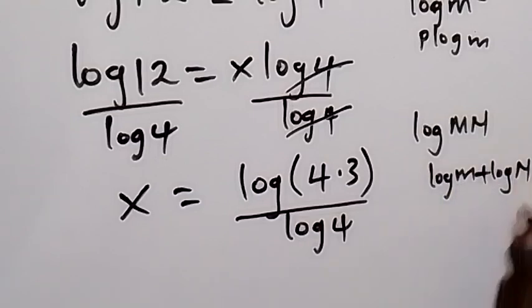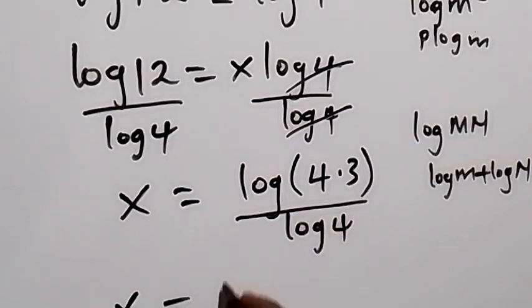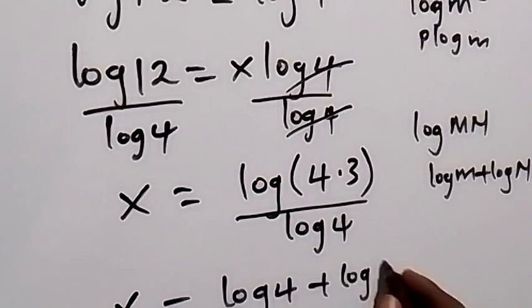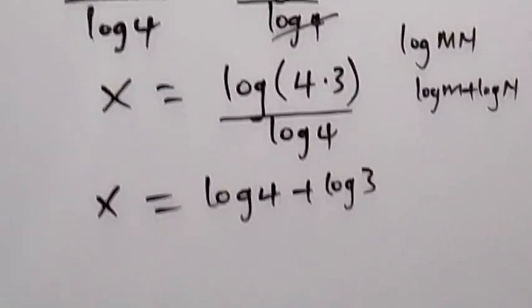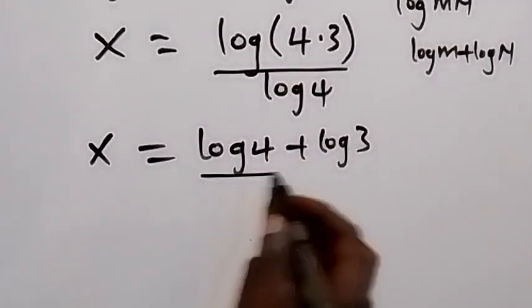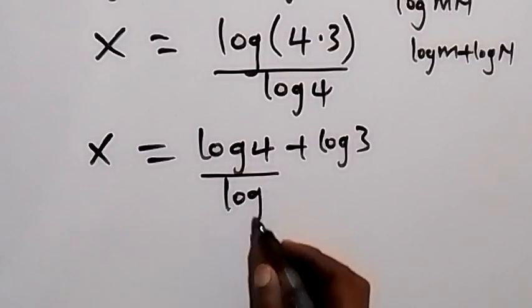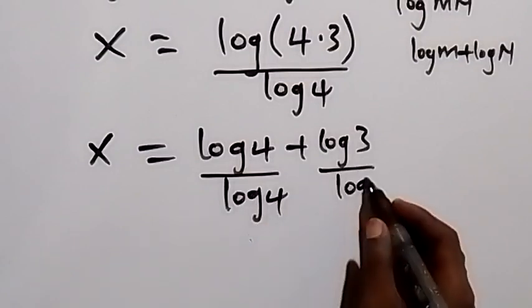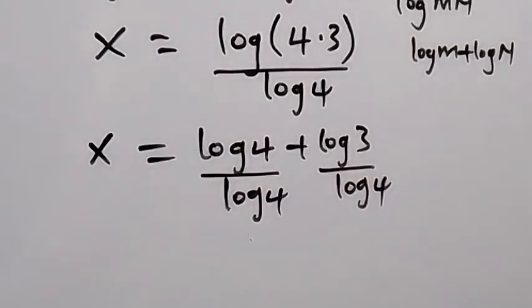So this is product law. Then when we apply that, we have x equals to log 4 plus log 3, then we divide by log 4. So when we divide everything by log 4, same thing as dividing each of them by log 4.